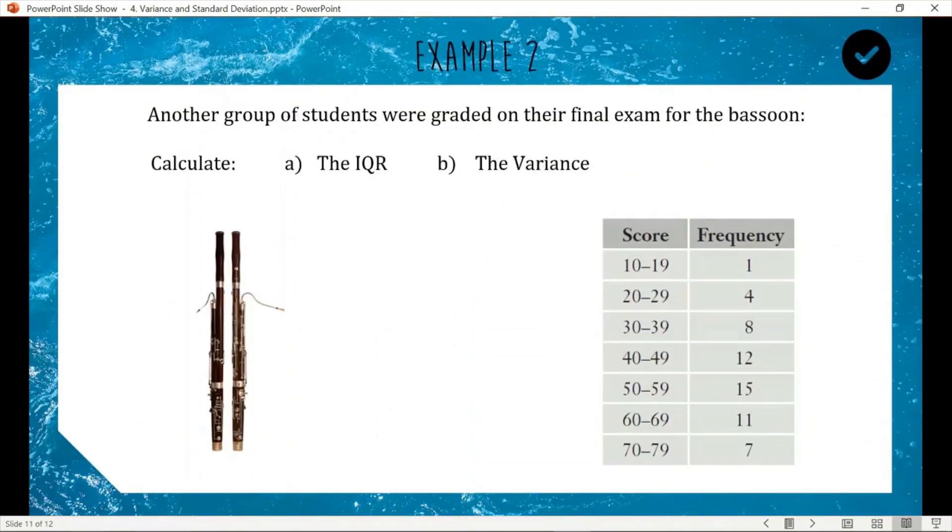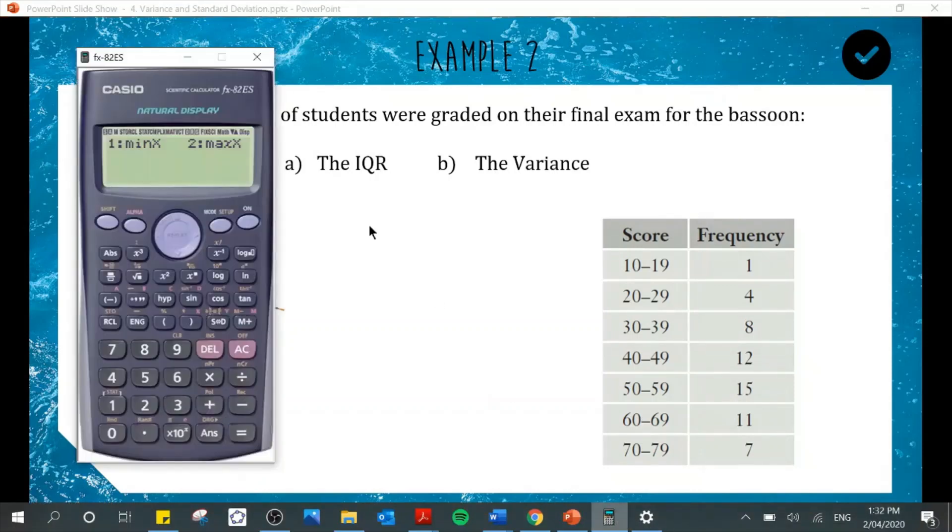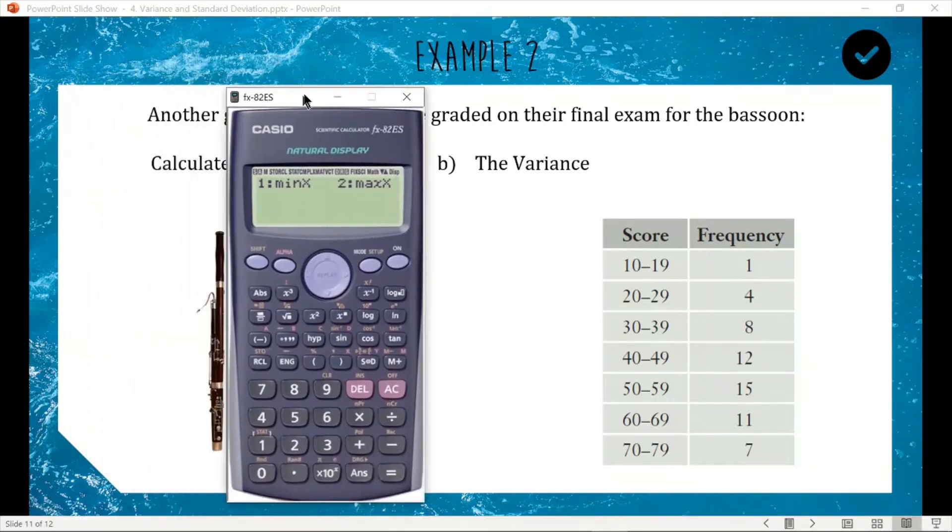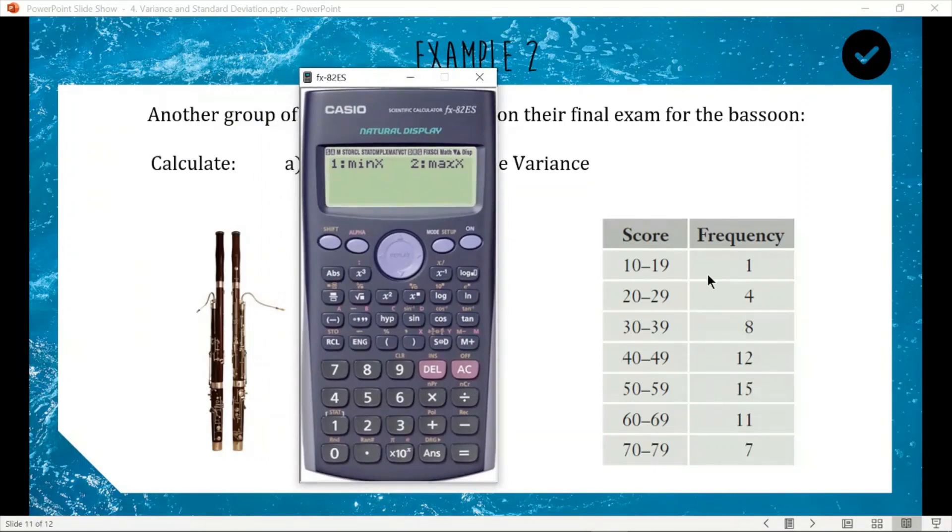For the next one, we have another group of students graded on their final exam for the bassoon. We want to find the interquartile range and the variance. So again, we are going to use our calculator. Just like last time, first thing we need to do is enter our data in. So first thing we need to do is clear it by turning the calculator off and on. So now we go mode. We go stats. Single variable data again. And now we have an empty table because we cleared it.